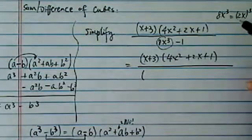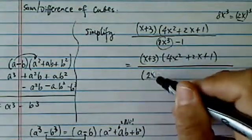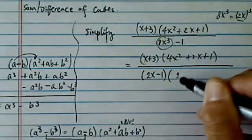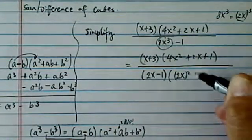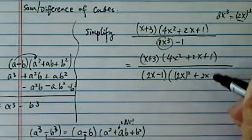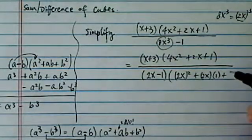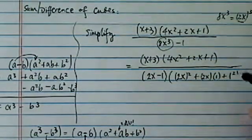Then what we're going to do is, first term is follow the sign, 2x minus 1, next one is 2x squared plus 2x times 1 plus 1 squared, okay.